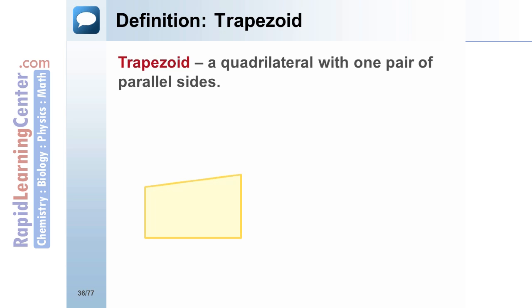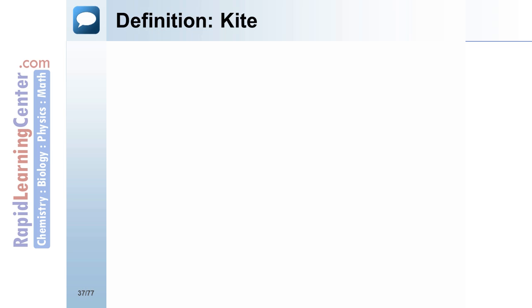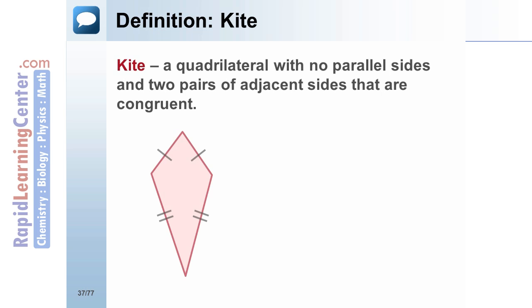A trapezoid is a quadrilateral with one pair of parallel sides. An isosceles trapezoid is a trapezoid with congruent legs. A kite is a quadrilateral with no parallel sides and two pairs of adjacent sides that are congruent.